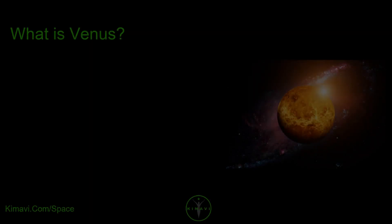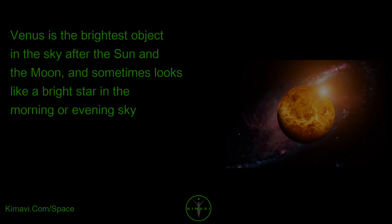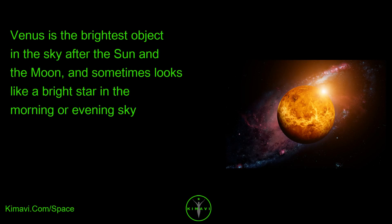What is Venus? Venus is the second planet from the Sun and is Earth's closest neighbor in the Solar System. Venus is the brightest object in the sky after the Sun and the Moon, and sometimes looks like a bright star in the morning or evening sky.